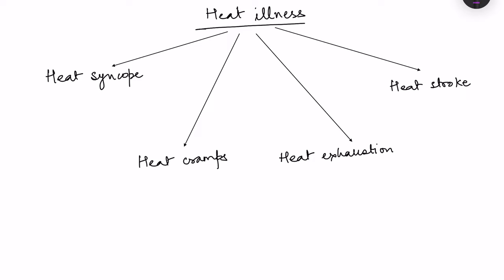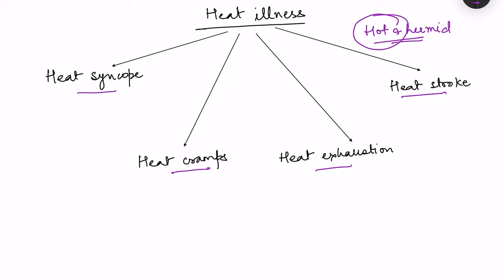Heat illnesses range in a spectrum from mild to severe, which includes heat syncope, heat cramps, heat exhaustion, and heat stroke. These heat illnesses result when the body is not able to balance the heat gained versus the heat lost. In especially hot and humid environments, these illnesses can occur because the body is restricted to losing heat only by sweating.